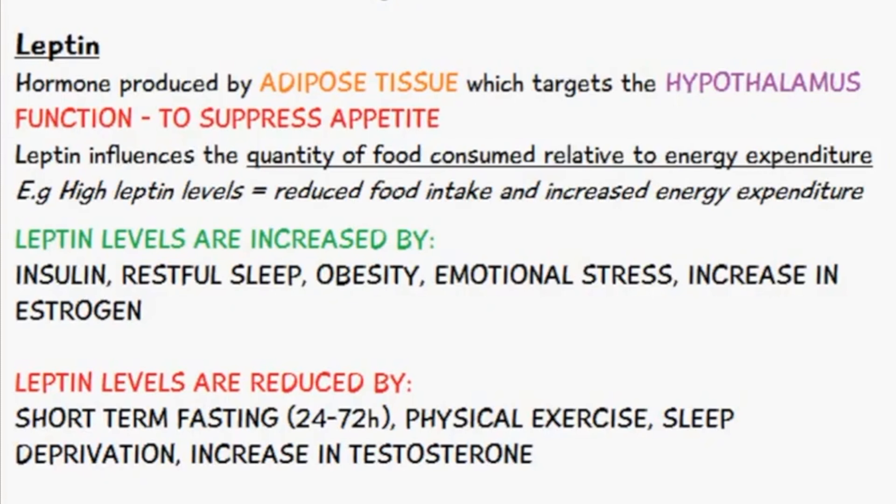Leptin levels are reduced by short-term fasting — so between 24 to 72 hours — physical exercise, sleep deprivation, and increases in testosterone.